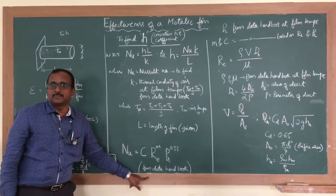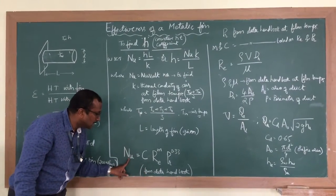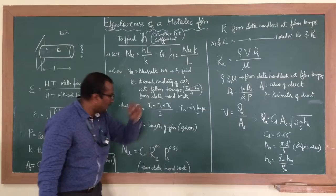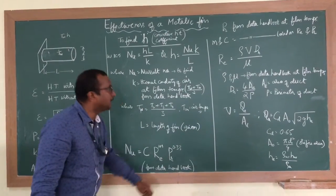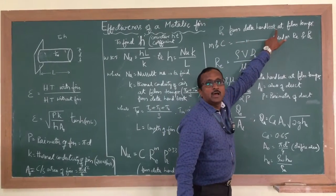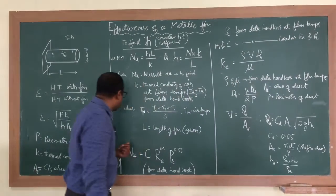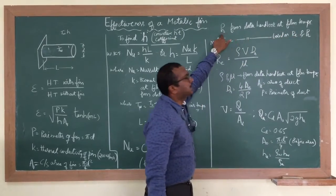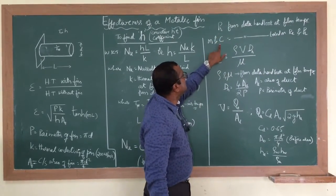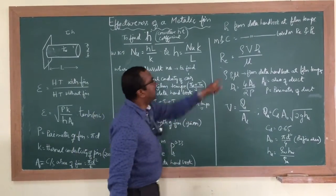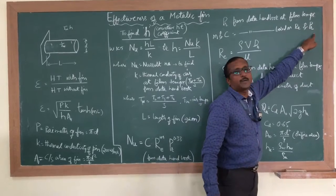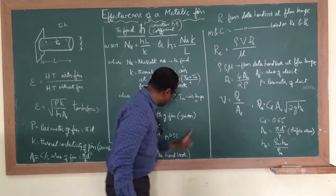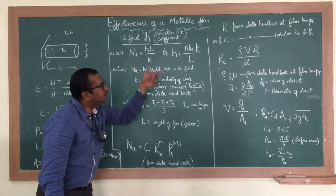The correlation is: Nu = C·Re^M · Pr^0.33. Here C, M are constants and Pr is the Prandtl number, taken from the data handbook at the film temperature in the same table where K is found. M and C values are given alongside this equation — their values depend upon the Reynolds number range. For different Reynolds number ranges, different M and C values are provided in the data handbook, and you must select the correct row.